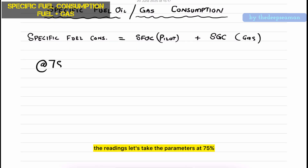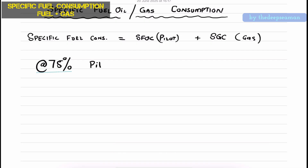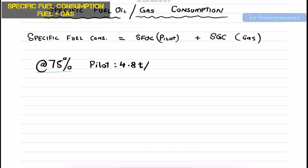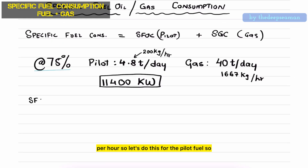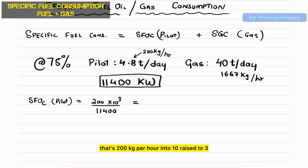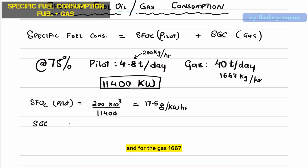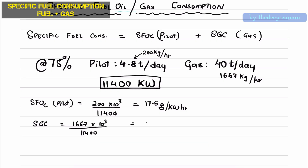Let's take the parameters at 75% engine load, which is around 11,400 kilowatt. The pilot fuel will be 4.8 tons per day, about 200 kg per hour, and the gas fuel at about 40 tons per day, approximately 1,667 kg per hour. For the pilot fuel: 200 kg/hr × 10³ ÷ 11,400 kW = 17.5 grams per kilowatt-hour. For the gas: 1,667 kg/hr × 10³ ÷ 11,400 kW = 146.2 grams per kilowatt-hour.